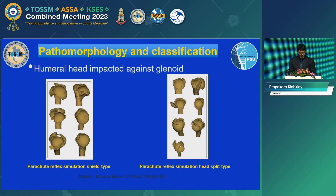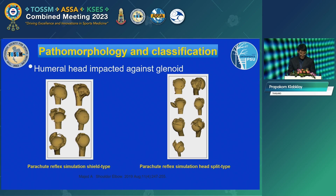For the mechanism of injury, we believe that the humeral head impacts against the glenoid, as shown in the picture.